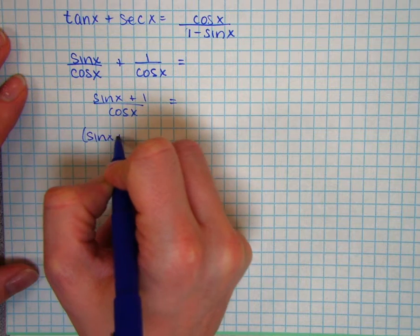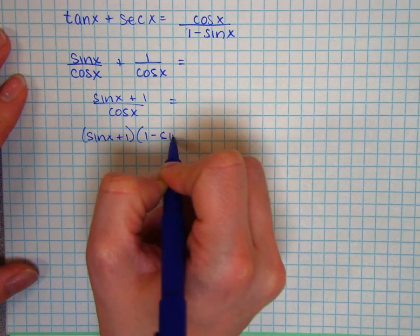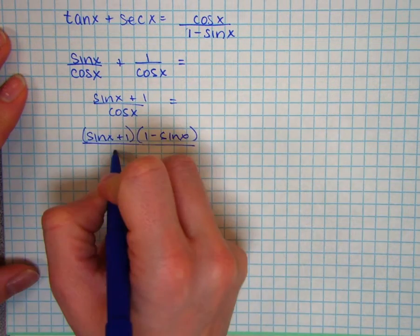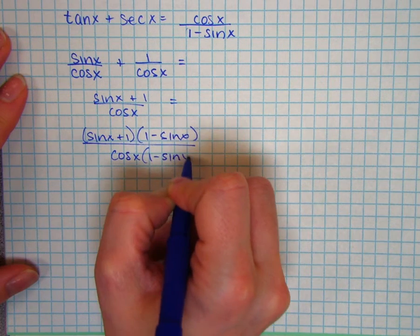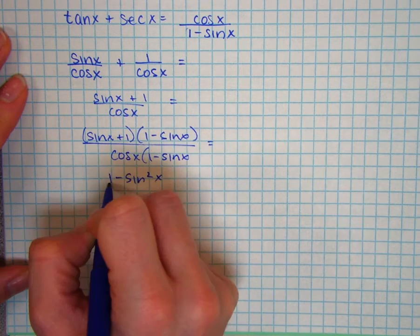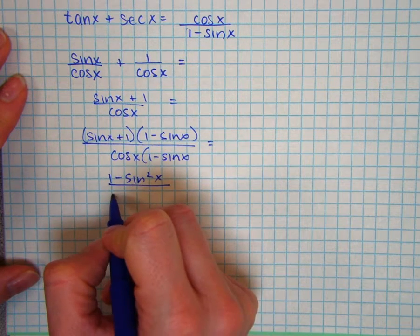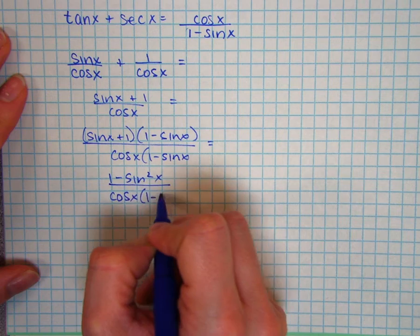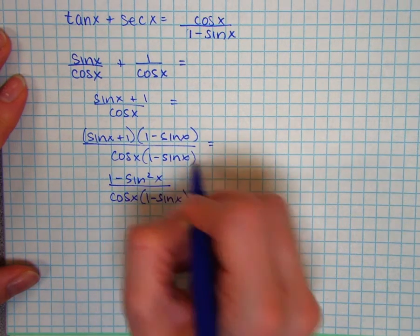So I have sine of x plus 1 times 1 minus sine of x. In the denominator, this is cosine of x times 1 minus sine of x. So I have 1 minus sine squared of x in the numerator, cosine of x times 1 minus sine of x in the denominator.